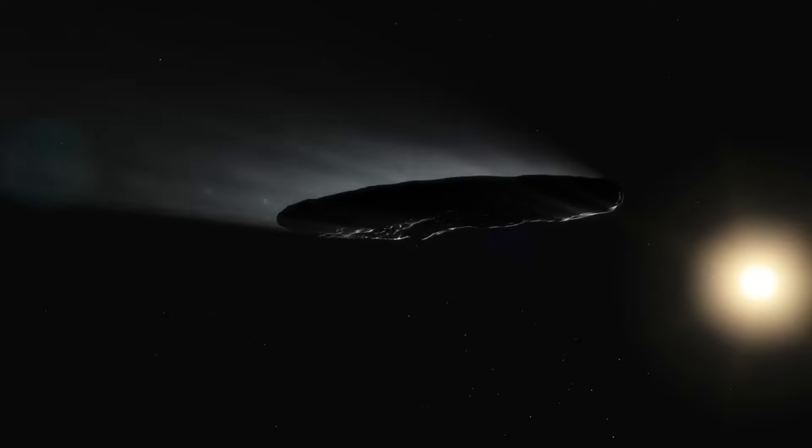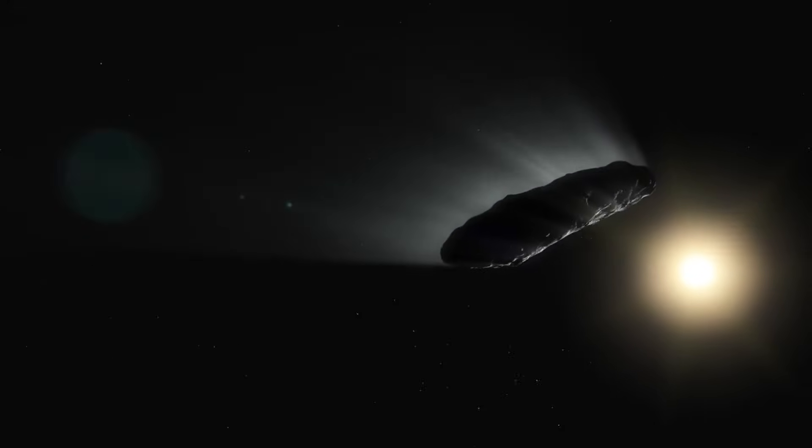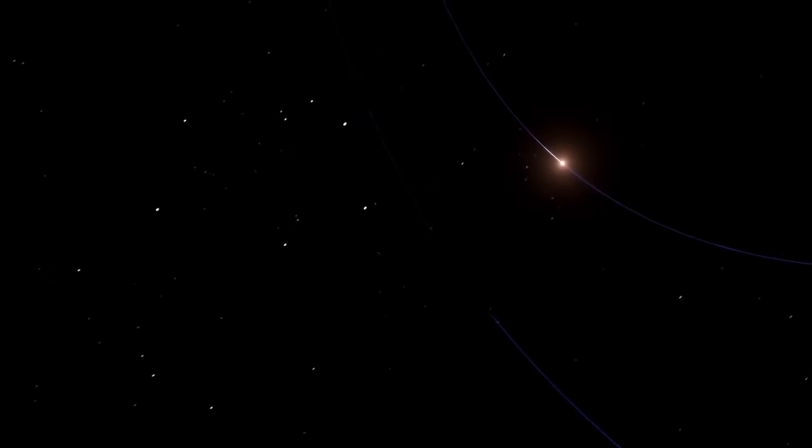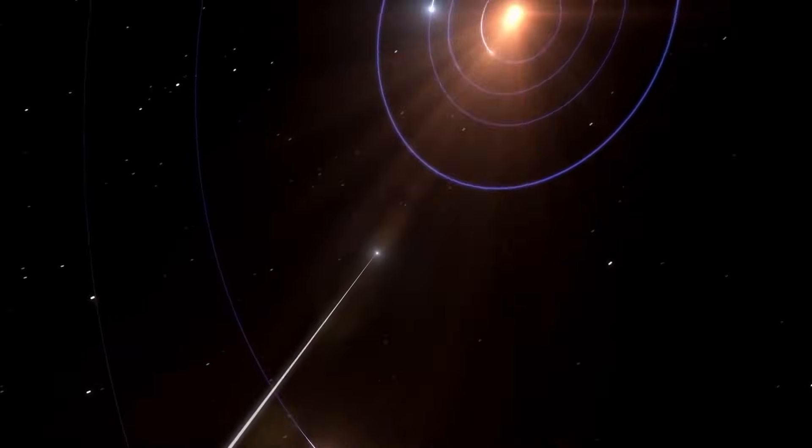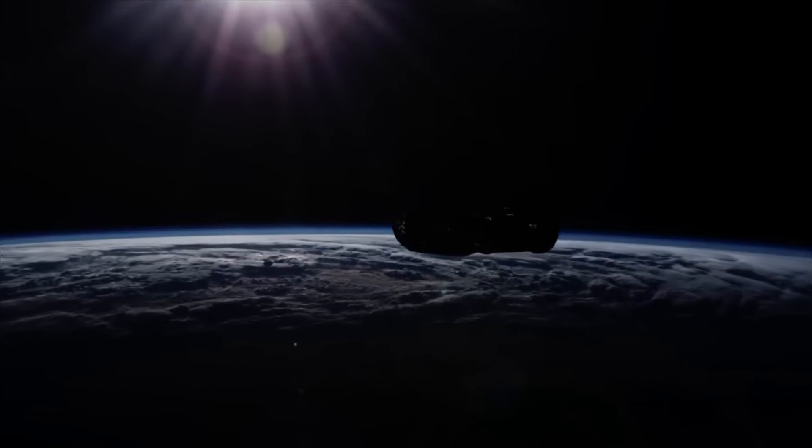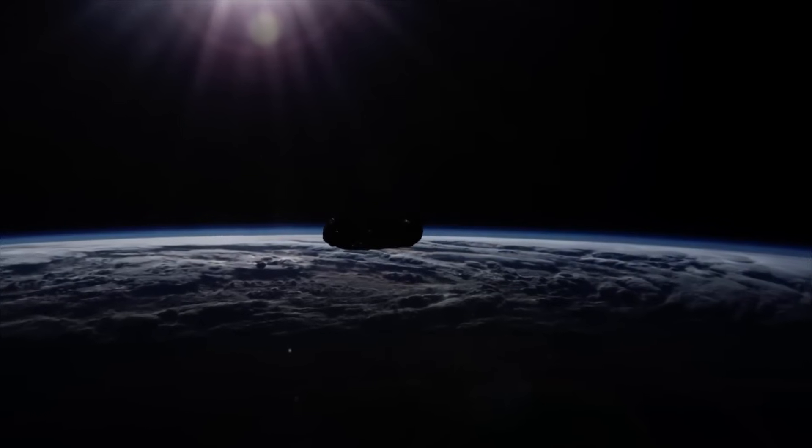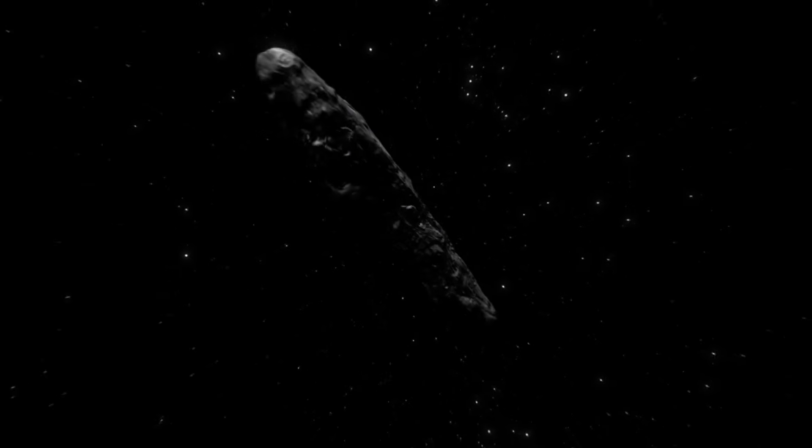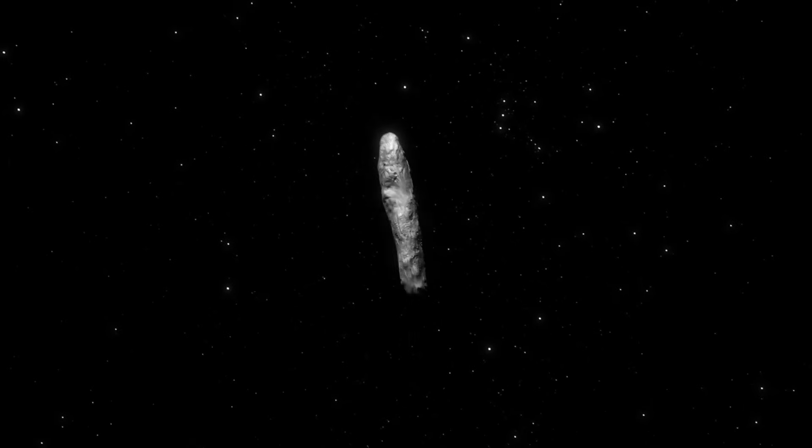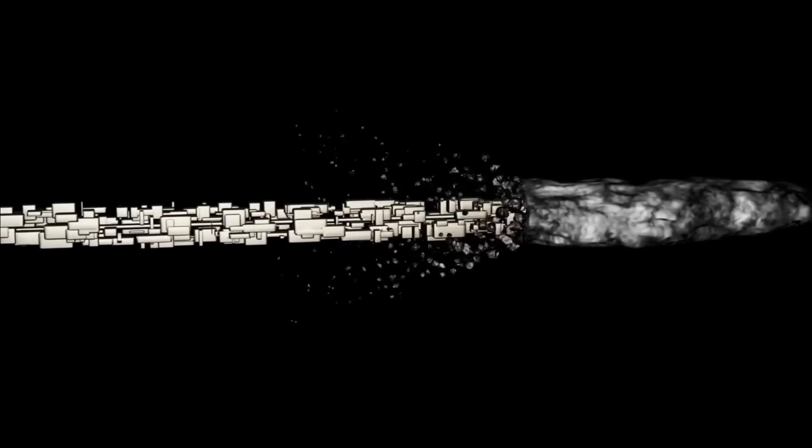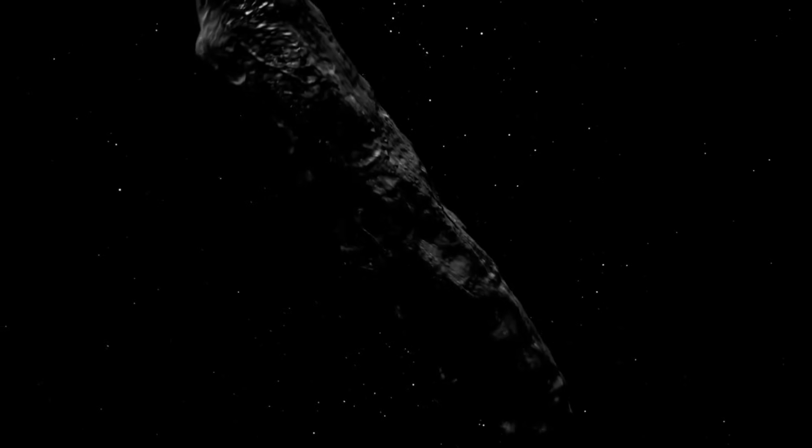Oumuamua looked like nothing we'd ever seen before. Unlike comets, it had no visible tail and no signs of outgassing. And unlike asteroids, its acceleration away from the sun couldn't be explained by gravity or known forces. Since its discovery, hypotheses have ranged from fragments of hydrogen ice to the possibility that it is a spacecraft designed by an advanced civilization. But no answer had been conclusive until now.